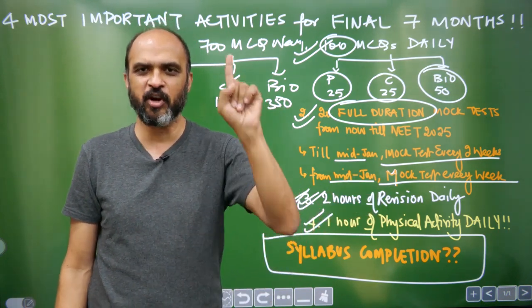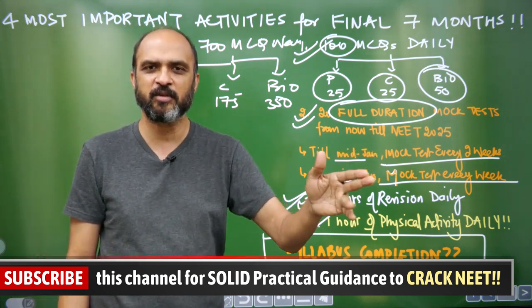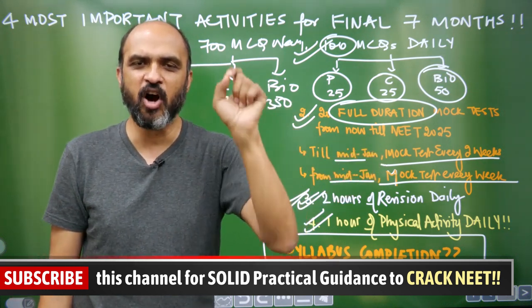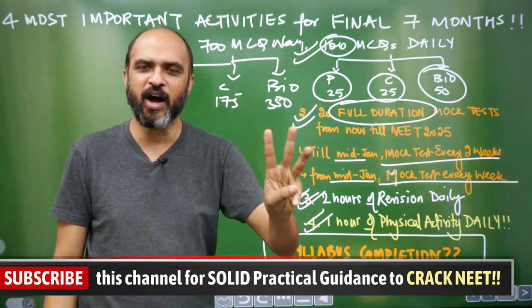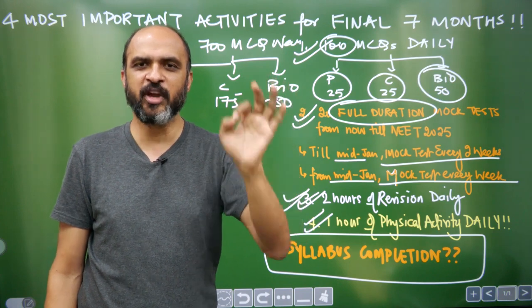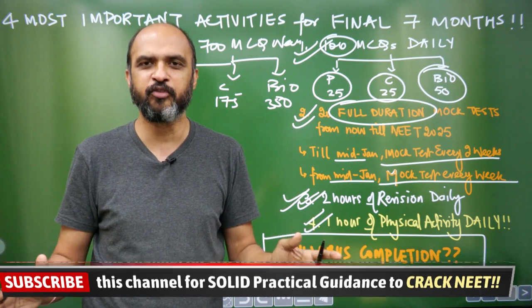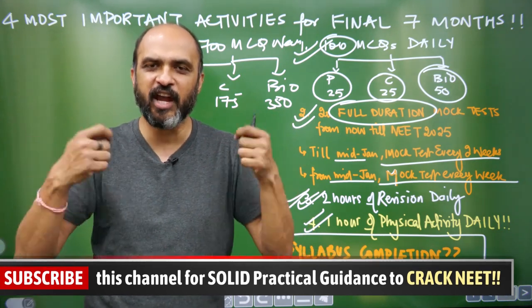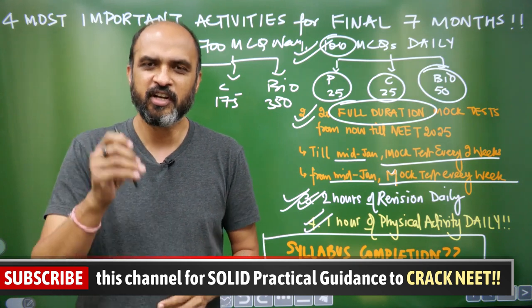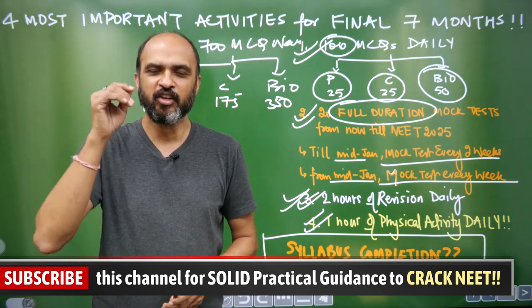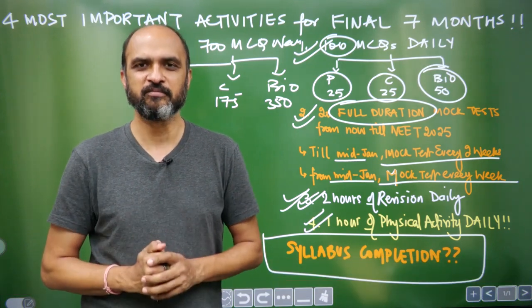So, these four things, very, very important. Daily at least 100 MCQs, maintaining balance between physics, chemistry and biology. Second, 20 mock tests, full duration from now till NEET exam. Third thing, two hours of revision daily. And fourth thing, you have to make sure you do at least one hour of physical activity daily. These are the four important things which you have to get into your daily activity, daily routine to crack NEET. Hopefully you have understood. Tell me in the comment section. You have understood this and commit to me. You are going to do this every day till NEET exam. Alright students.